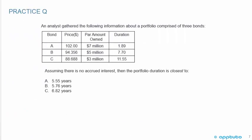Another practice question: an analyst gathered information about a portfolio of three bonds, given the price, par amount owned, and duration. Bond A: price 102, par amount owned 7 million, duration 1.89. Bond B: price 94.356, par amount owned 5 million, duration 7.7. Bond C: price 88.688, par amount owned 3 million, duration 11.55. Assuming no accrued interest, the portfolio duration is closest to A) 5.55 years, B) 5.76 years, or C) 6.82 years.